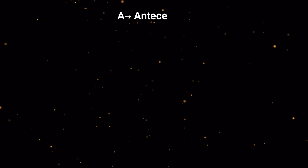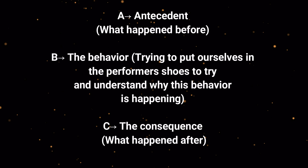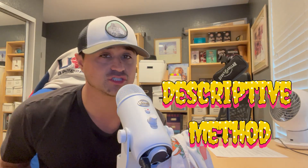Number four, consequences that are reinforcing those other behaviors. Basically, we need to take a look at the three-term contingency: A — antecedent, what happened before; B — the behavior, putting ourselves in the performer's shoes to understand why the behavior is happening; and C — the consequence, what happened after.